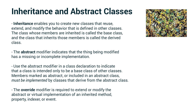Inheritance enables you to create new classes that reuse, extend, and modify the behavior that is defined in other classes. The class whose members are inherited is called the base class, and the class that inherits those members is called the derived class — and by members we mean functions, variables, et cetera. The abstract modifier indicates that the thing being modified has a missing or incomplete implementation. We use it in a class declaration to indicate that a class is intended only to be a base class. Members marked as abstract must be implemented by classes that derive from the abstract class. The override modifier is required to extend or modify the abstract or virtual implementation of an inherited method, property, indexer, or event.